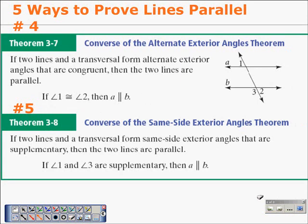Here are the last two ways to prove lines parallel. The converse of the alternate exterior angles theorem: if two lines and a transversal form alternate exterior angles that are congruent, then the two lines are parallel. In the diagram, if angle 1 is congruent to angle 2, then line A is parallel to line B.